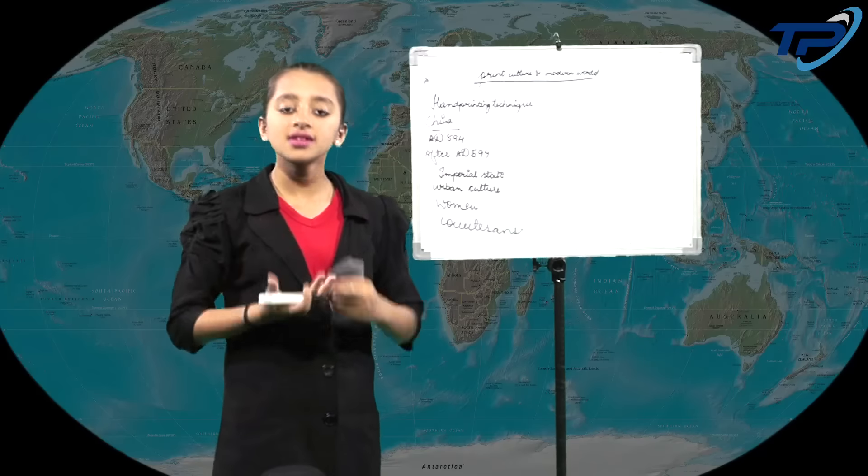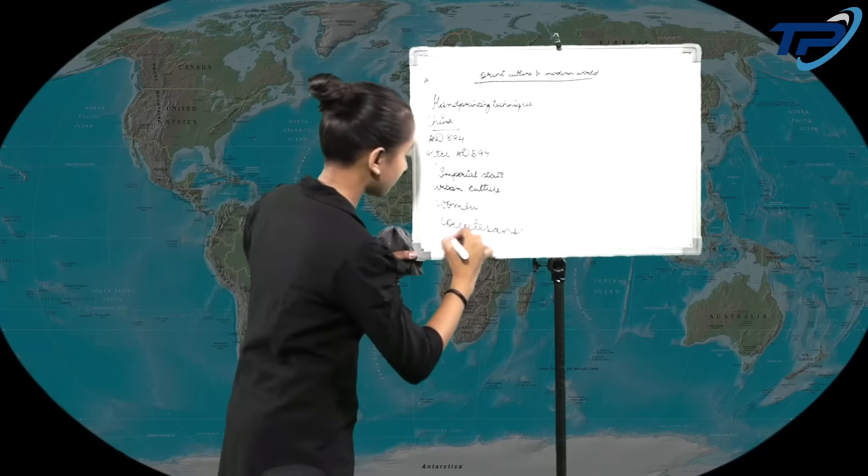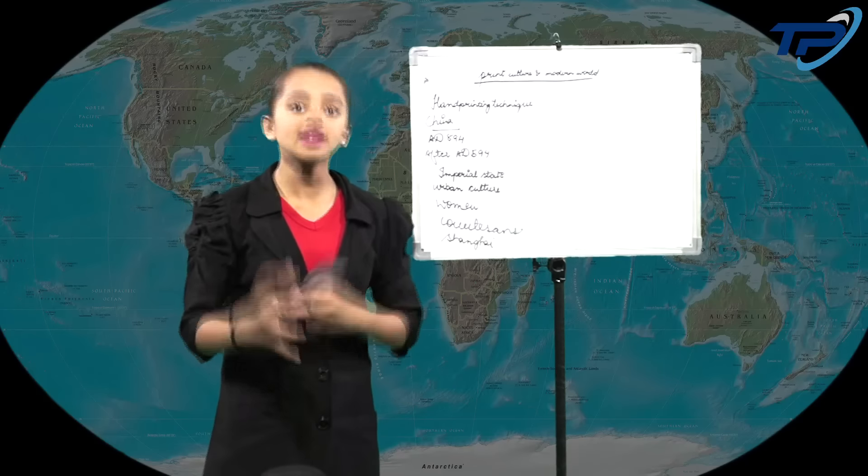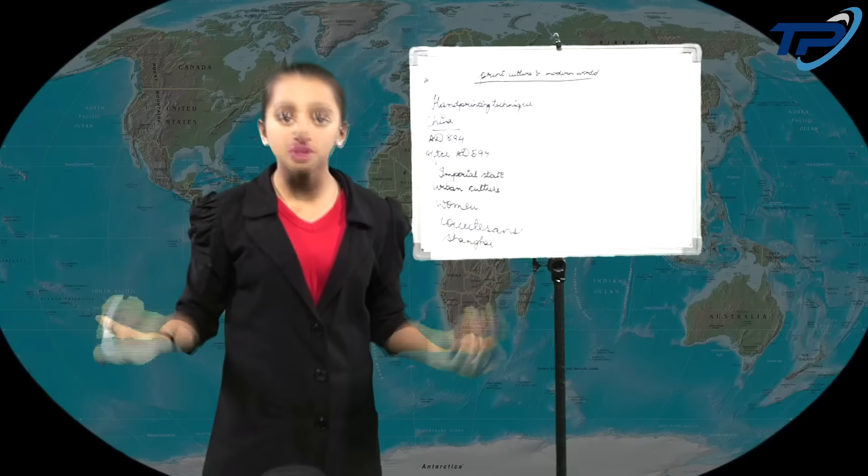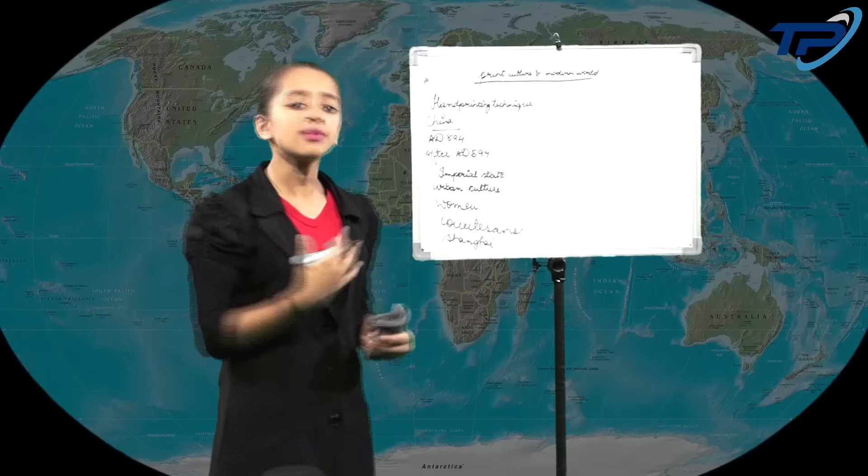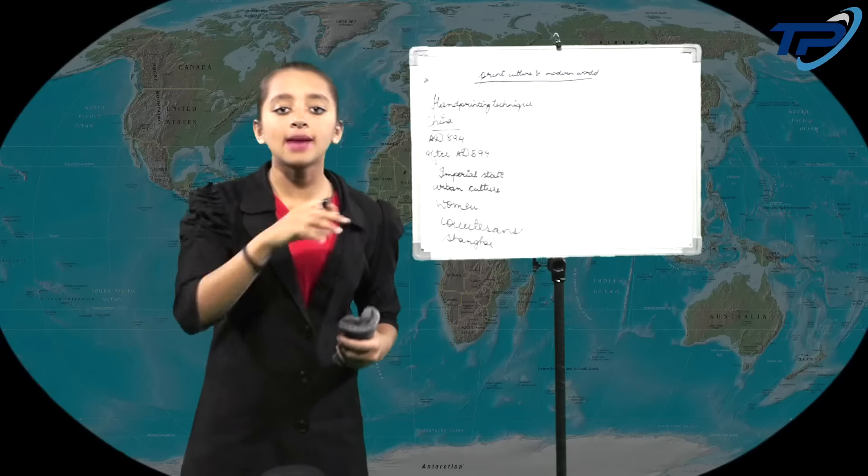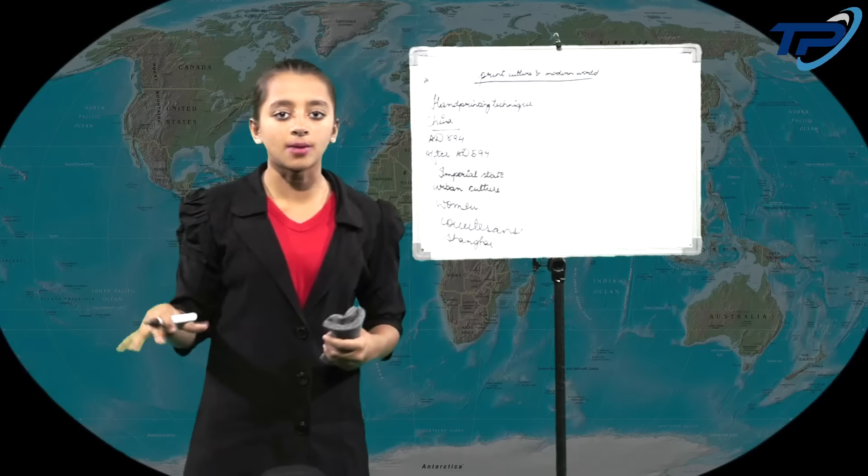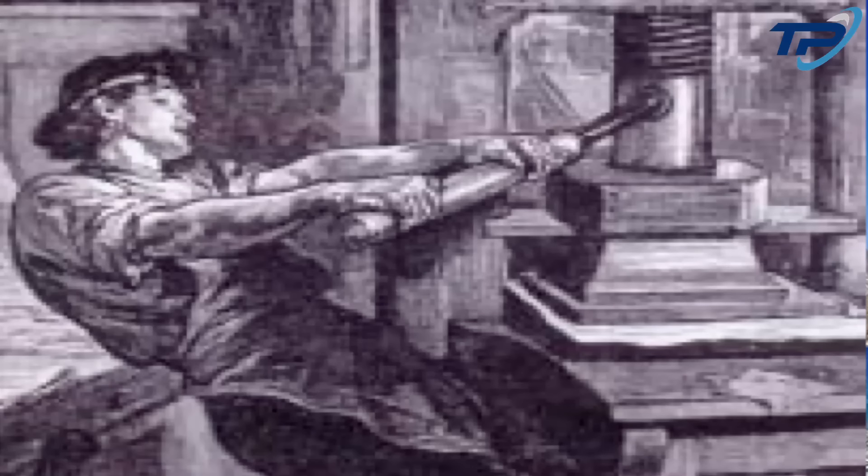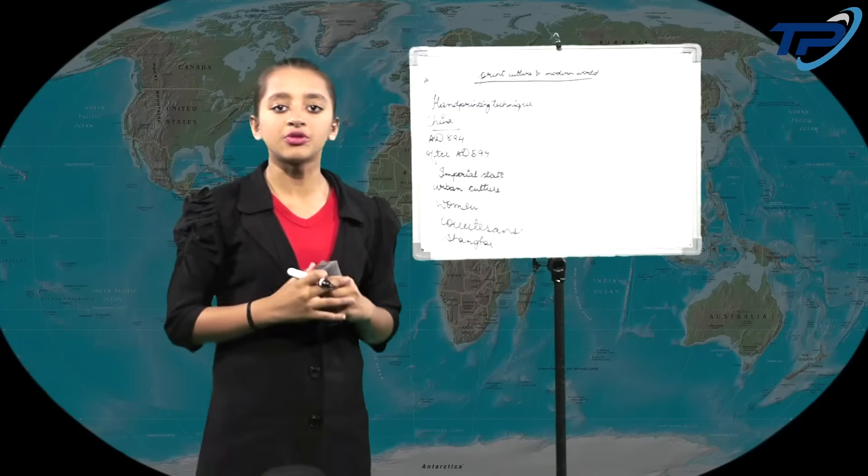The next thing is Shanghai. In the late 19th century, the western print technologies came into China as the western powers established their outposts in China. Shanghai became the new hub of the new printing culture.